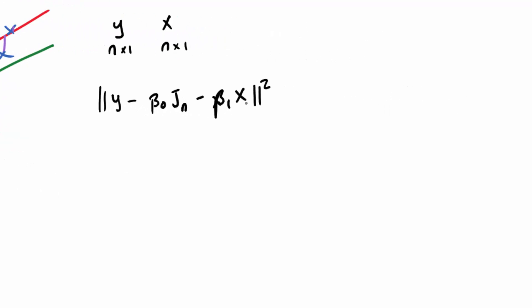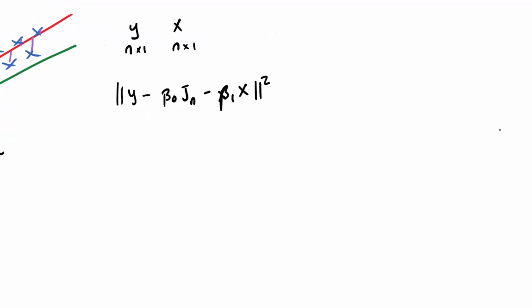Now you can do this by taking derivatives of course. And in this case, because there's just two parameters, you can do it very easily. However, I want to show how to do this by just referring back to regression to the origin.